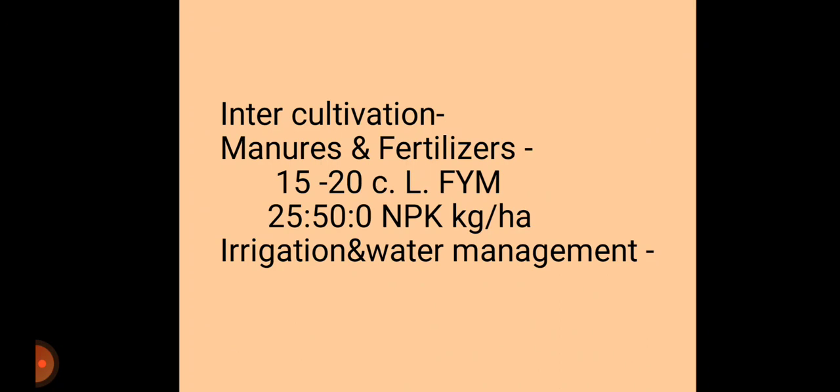For intercultivation and weed management, two mechanical weedings should be done — the first at 25 to 30 days after sowing and the second hand weeding at 40 to 45 days after sowing. The field should be kept weed-free up to 30 to 45 days, as this is the critical crop-weed competition period. Pre-emergence herbicides like alachlor (Lasso) at the rate of 3 liters per hectare can also be applied for weed control.